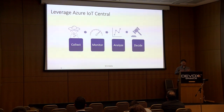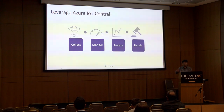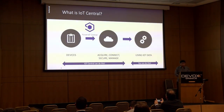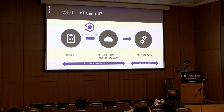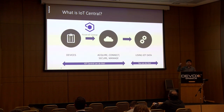To leverage Azure IoT Central, there are four things to think about: how do you collect the data, how do you monitor these devices, how do you analyze the data coming from these devices, and where do you send this data — to the cloud or to other parts of your system? IoT Central helps you acquire, connect, and secure your devices, and then you decide what to do with that IoT data.